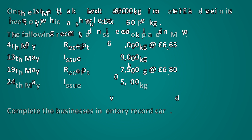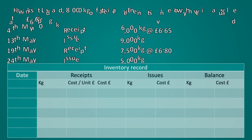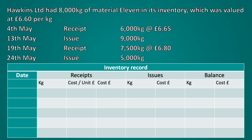We start off with the opening balance at the beginning of the month. This would be 8,000 kilograms, and the question stated that these would be valued at £6.60 per kilogram, giving us a total value of £52,800.